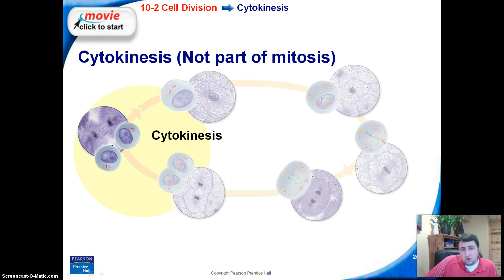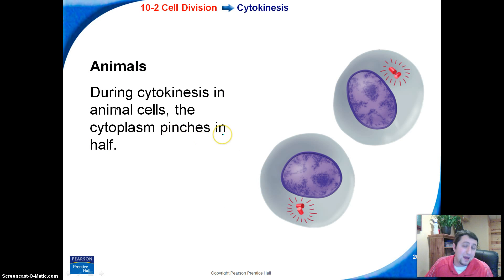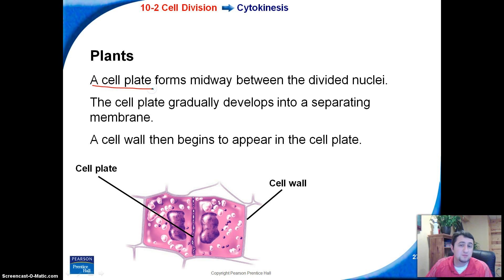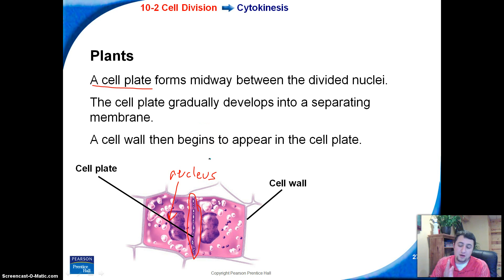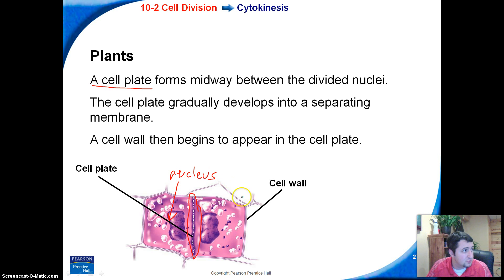The last thing that happens in cell division is splitting the cytoplasm, which is not the same as mitosis — mitosis only talks about splitting the DNA in the nucleus. Splitting the cytoplasm is called cytokinesis, and that's not part of mitosis. In animals, the cytoplasm simply pinches off. In plants, it's a bit more complicated — there's a cell plate that forms between the two new nuclei produced by mitosis. That cell plate gradually develops and forces the two plant cells apart, and a new cell wall begins to form where the cell plate was, dividing the two plant cells.